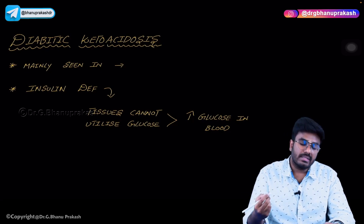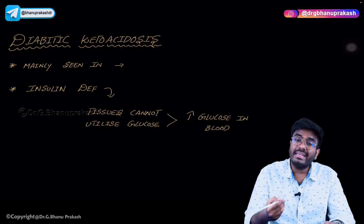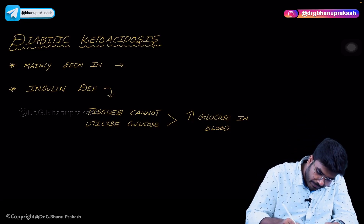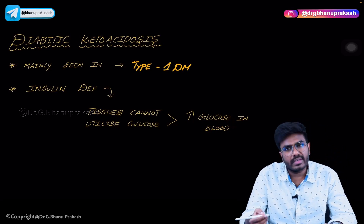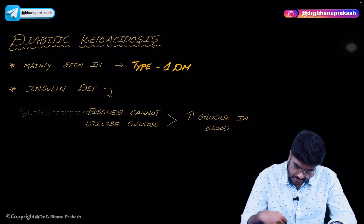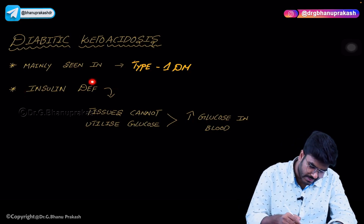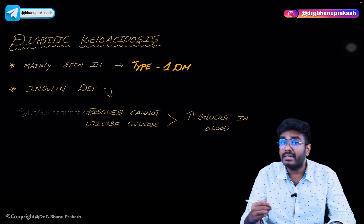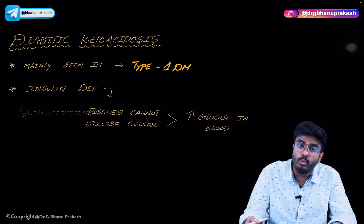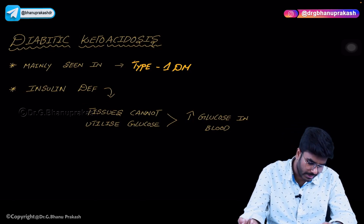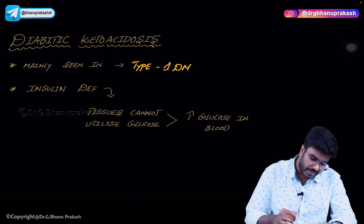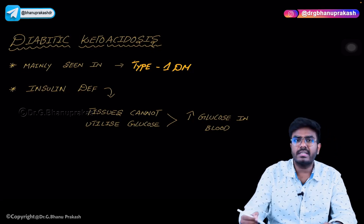We will see diabetic ketoacidosis mainly in type 1 diabetes mellitus. In type 1 diabetes mellitus there is insulin deficiency, whereas in type 2 diabetes mellitus the problem is insulin resistance. In type 1 diabetes mellitus, yes, there is insulin deficiency.